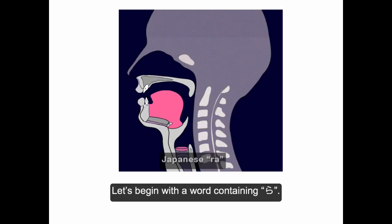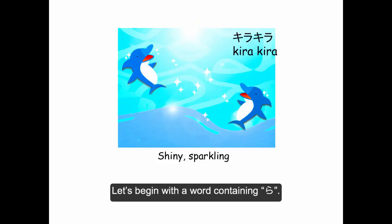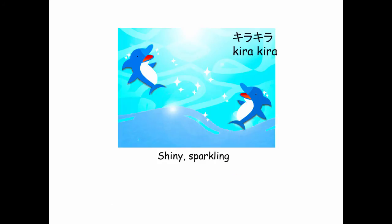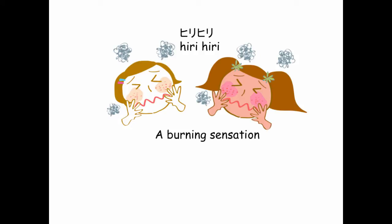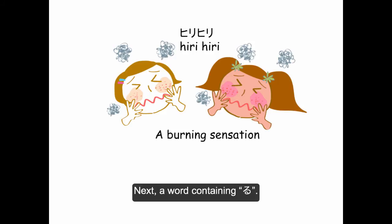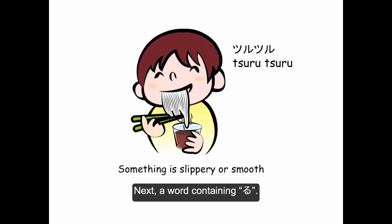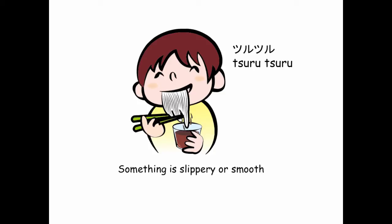Let's begin with a word containing ら: キラキラ. Next, a word containing り: ひりひり. Next, a word containing る: つるつる.